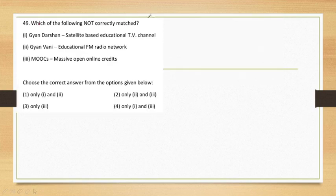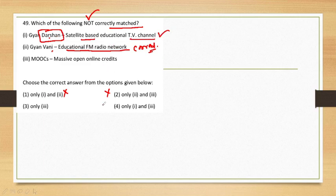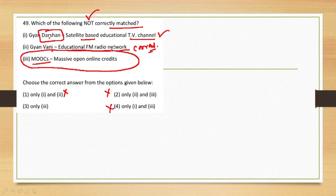Question number 49: Which of the following is not correctly matched? We know the first match — Gyan Darshan — is an audio and video satellite-based educational TV channel, which is correct. The second match is also correct. The third statement is not correctly matched because MOOC stands for Massive Open Online Course, not 'credits.' That is why the third option will be our right answer as the incorrectly matched one.